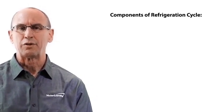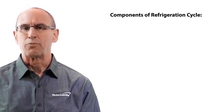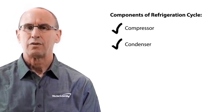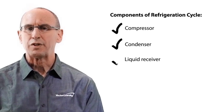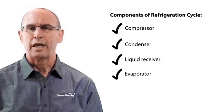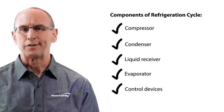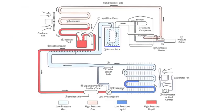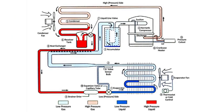The main components of the refrigeration cycle are the compressor, the condenser, liquid receiver, the evaporator, and there are also control devices. This diagram here shows a typical refrigeration cycle with these components arranged in order to provide the chilling component of an air handling system.